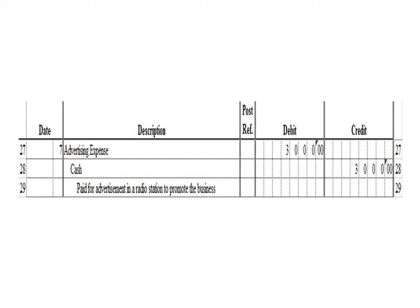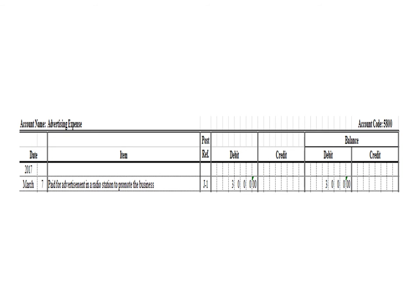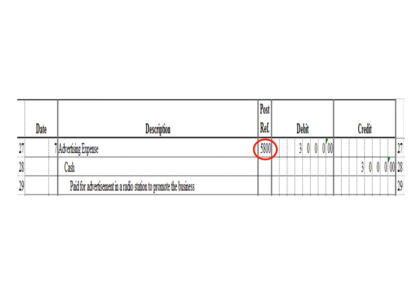Next transaction: a debit to advertising expense $3,000 and a credit to cash $3,000. To post the debit entry in the advertising expense ledger, we write the date March 7, the description: paid for advertisement in a publication to promote the business, posting reference J1. Under the debit column, write $3,000, and in the balance section under debit, write $3,000. After posting, we write the posting reference 5800, the account code for advertising expense.